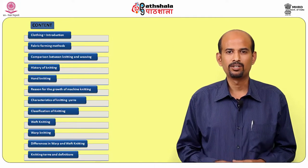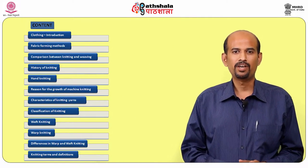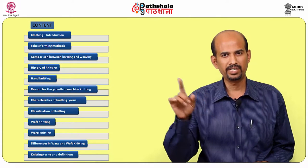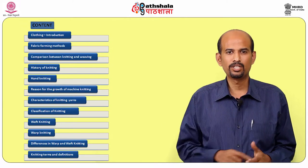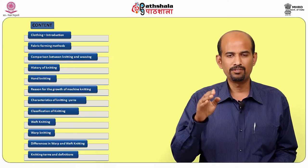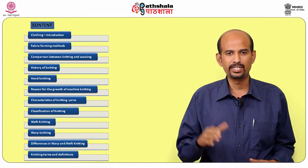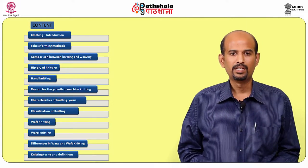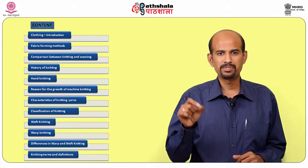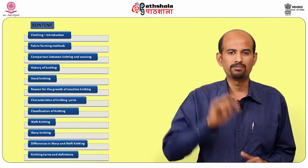Hello students, today we are going to deal with knitting, which is going to be the second largest manufacturing system of fabric. The content of today's topic includes: clothing introduction, fabric forming techniques, the comparison between weaving and knitting, the history of knitting, hand knitting, the growth of machine knitting, reasons for that growth, characteristics of knitted fabric, yarn, classification of knitting, weft knitting, warp knitting, and the difference between weft and warp knitting.